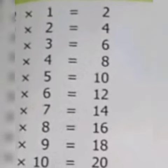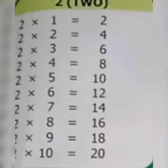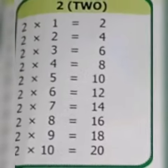2 7s are 40, 2 8s are 16, 2 9s are 18, 2 10s are 23.